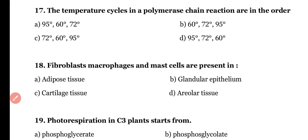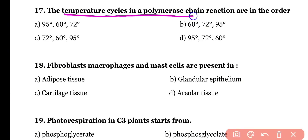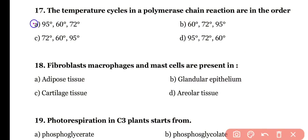Question number seventeen: the temperature cycles in polymerase chain reaction are in the order (a) 95°C, 60°C, 72°C; (b) 60°C, 72°C, 95°C; (c) 72°C, 60°C, 95°C; or (d) 95°C, 72°C, 60°C. The correct answer is option A — first is denaturation at 95°C, then annealing at 60°C, and primer extension at 72°C.